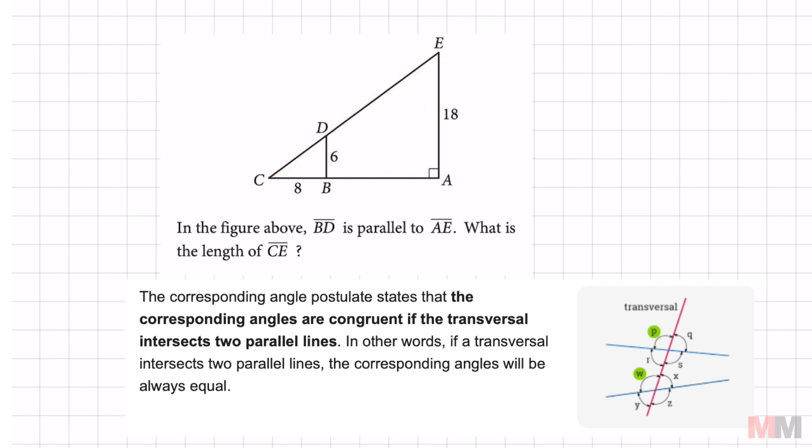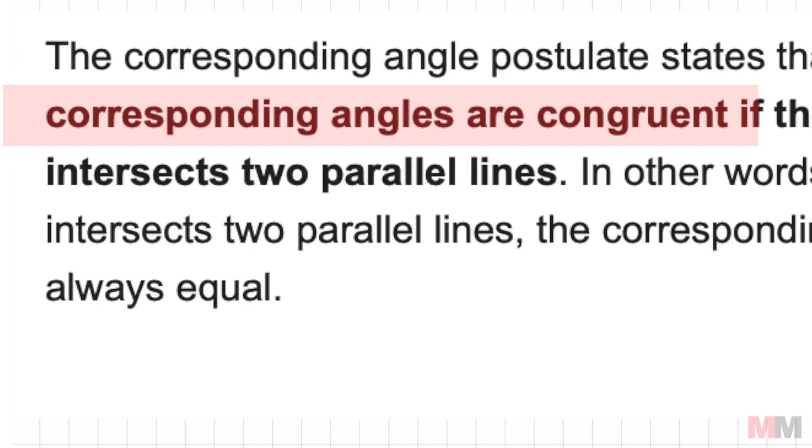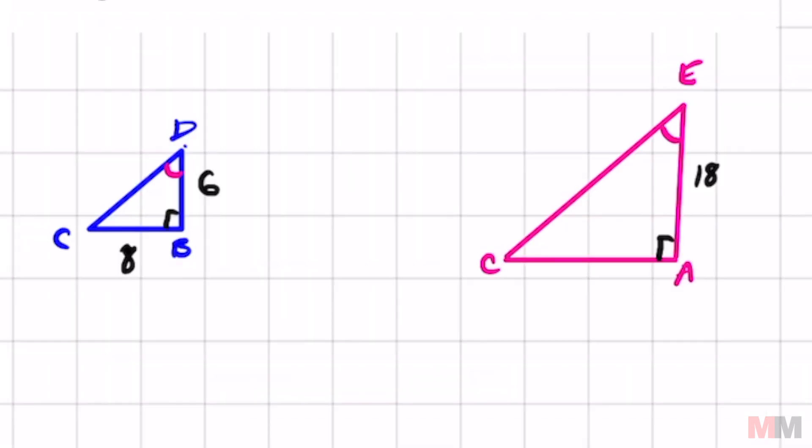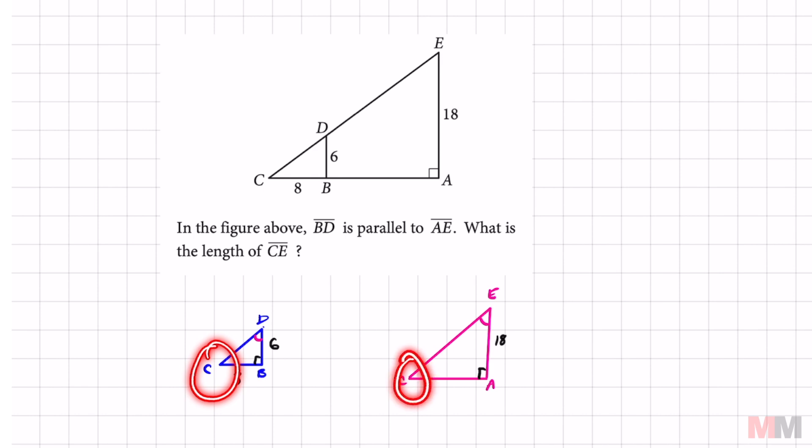And in a transversal, angle CDB and angle E are going to be congruent because corresponding angles in a transversal are congruent. If you look at the picture, angle C is also congruent to itself because they share that common angle.